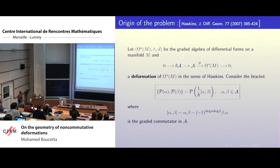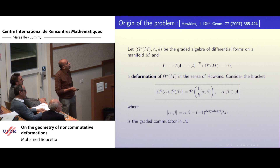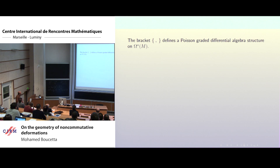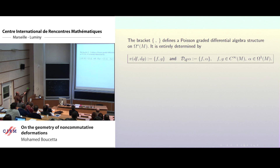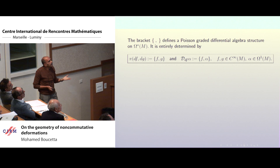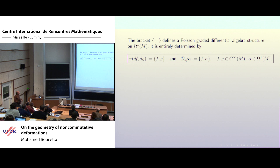By this construction, this new bracket on the algebra satisfies some properties — it is a Poisson bracket on the algebra of differential forms. And it is entirely defined by its evaluation on functions and on one-forms, because it is local, and locally every differential form can be written as combinations of functions and one-forms which generate the algebra of differential forms locally.